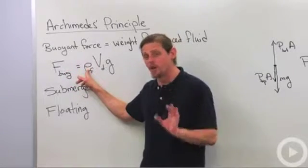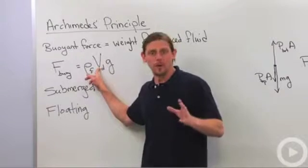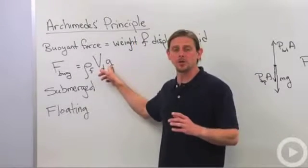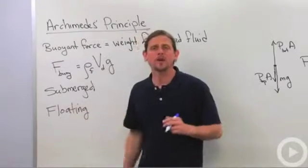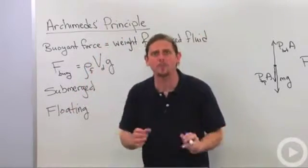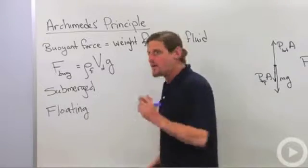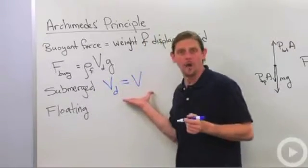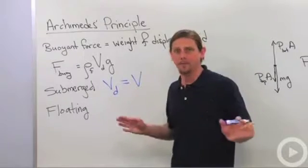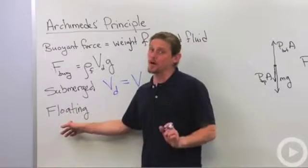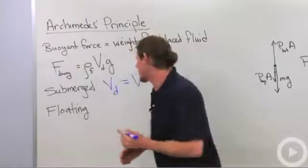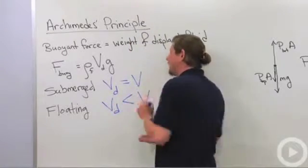Well, it's the density of the fluid times the volume of the fluid that's been displaced. So that's the volume of the object that's immersed in the fluid times acceleration due to gravity. Alright, now we have two major situations in which we can use Archimedes principle. If the object is completely submerged, so the entire object is immersed in the fluid, then the volume displaced equals the volume of the object. If the object is floating on the other hand, then what that means is that it's not all the way immersed. What that means is that the volume displaced is actually less than the whole volume.